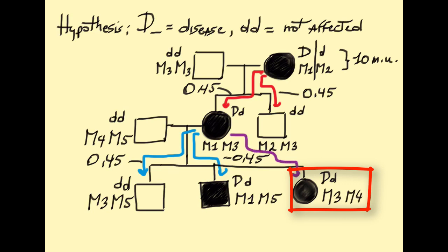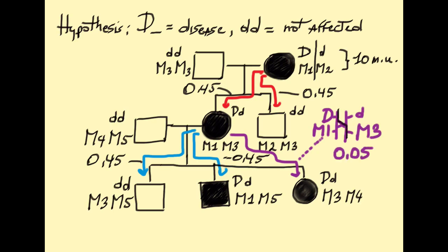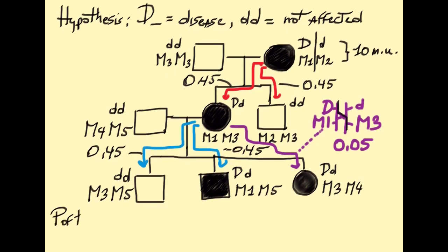Following the hypothesis of big D m1 linkage, this event implies a crossing over with a connected probability of the recombinant chromatid being 0.05. We can now calculate the probability of the whole pedigree, assuming theta equals 0.1, as 0.45 to the fourth power times 0.05 to the first power, or 0.002.